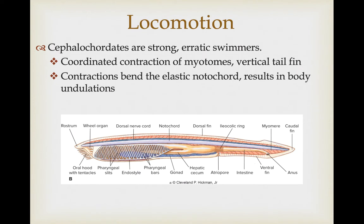Because they have large muscle bands, cephalochordates are strong swimmers, but relatively erratic — they don't have good directional control due to a lack of stabilizing fins. Locomotion comes from coordinated contraction of the myotome bands and the vertical tail fin. What these myotomes do is bend the elastic notochord, and when those muscles on that side relax, the elasticity in the notochord snaps back, resulting in body undulations.